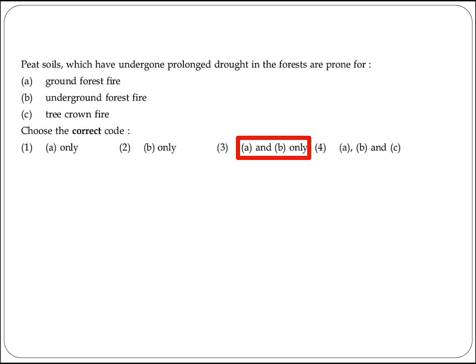The next question states that peat soils which have undergone prolonged drought in the forest are prone to ground forest fire and underground forest fire. Option 3 (A and B only) is the right answer.